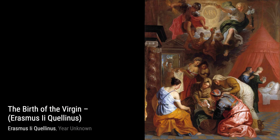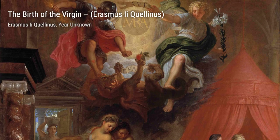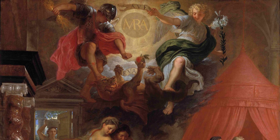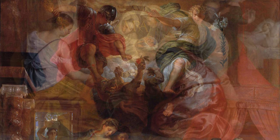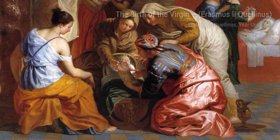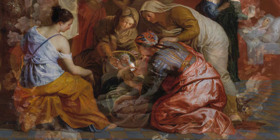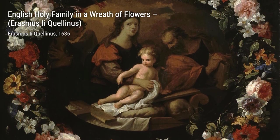Erasmus Quellinus the Younger, also known as Erasmus Quellinus II, was a Flemish artist who worked in various genres including history, portrait, allegorical, battle, and animal paintings. He was a pupil of Peter Paul Rubens and became one of the most successful painters in Flanders after Rubens' death. Let's take a closer look at some of Erasmus Quellinus the Younger's remarkable artworks.